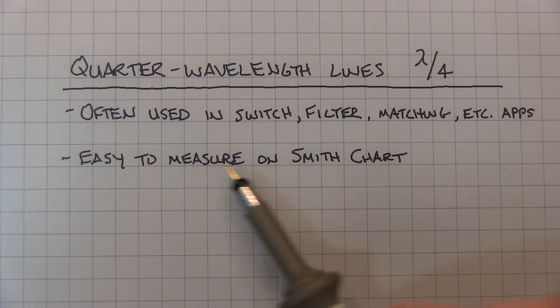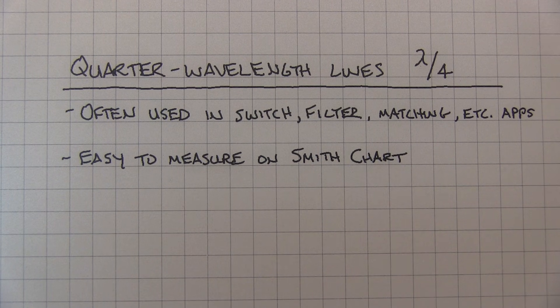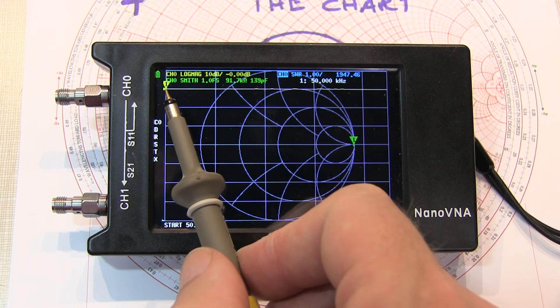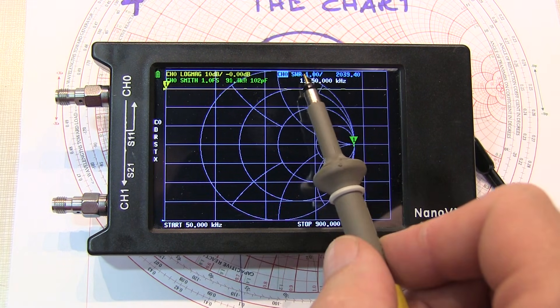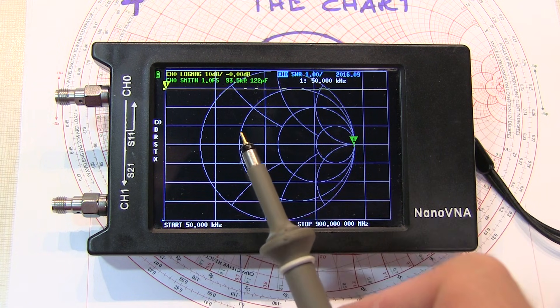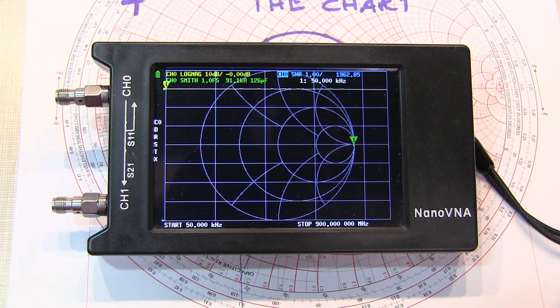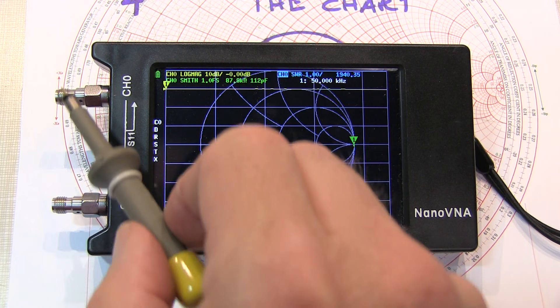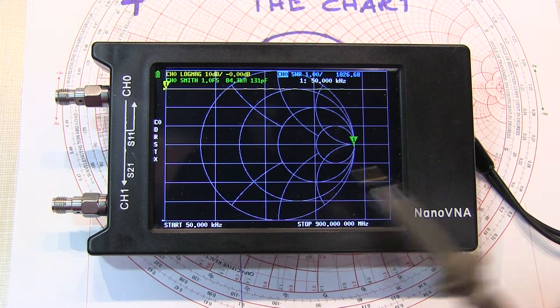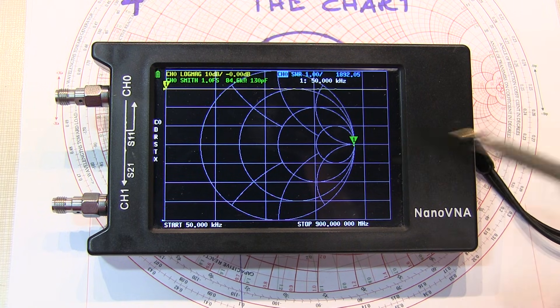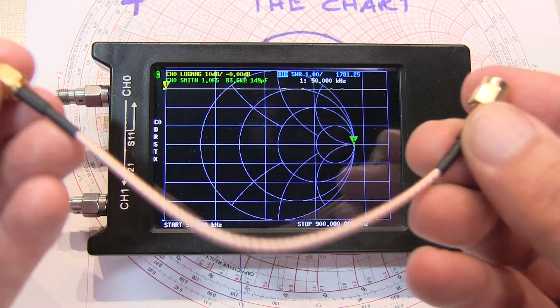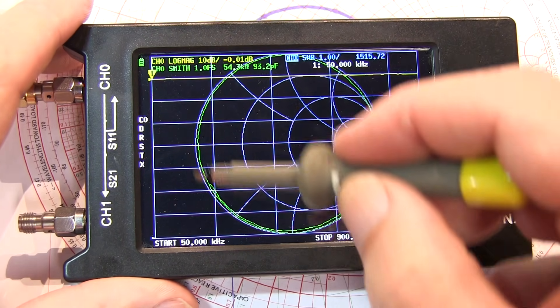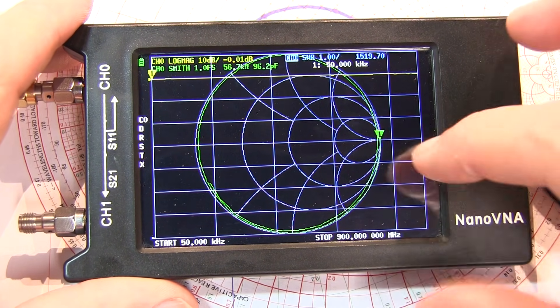Now, of course, quarter-wavelength lines are actually very easy to measure and visualize on a Smith chart. We have the NanoVNA set up with three traces. The yellow trace is the log magnitude of the reflection coefficient, or S11. The blue trace is plotting the same thing, but as SWR. And then the green trace is plotting the Smith chart. The unit's been calibrated from 50k to 900 meg at the end of these connector savers. We see the open circuit showing up on the Smith chart as we expect.